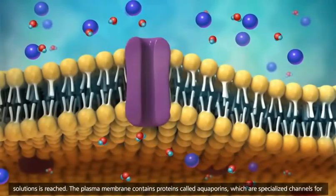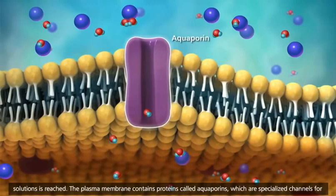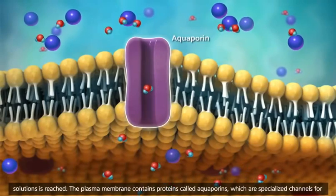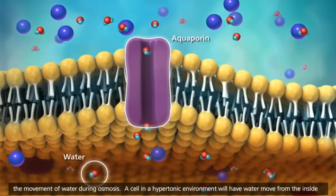The plasma membrane contains proteins called aquaporins, which are specialized channels for the movement of water during osmosis.